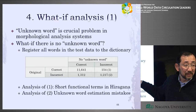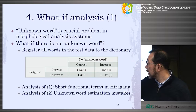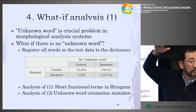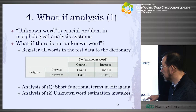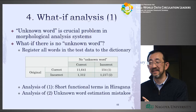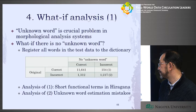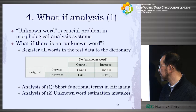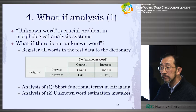They analyzed the main cause: short functional terms in hiragana. Some Twitter words use very special expressions, and if these happen to be hiragana, they confuse the system a lot. Also, the system has an unknown word estimation function — when a certain condition holds, it identifies a token as possibly an unknown word — but this function works too much and causes incorrect outputs even when correct words are added.